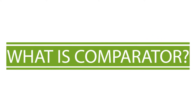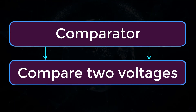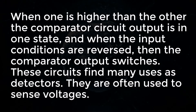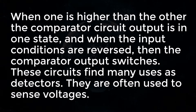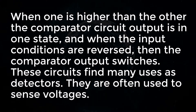What is a comparator? As the name implies, comparators are used to compare two voltages. When one is higher than the other, the comparator circuit output is in one state. And when the input conditions are reversed, the comparator output switches.